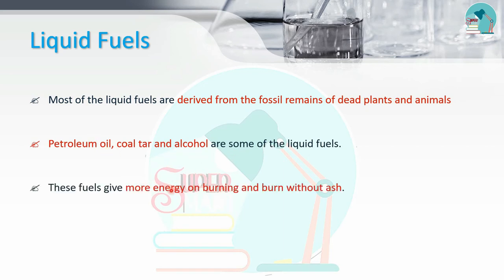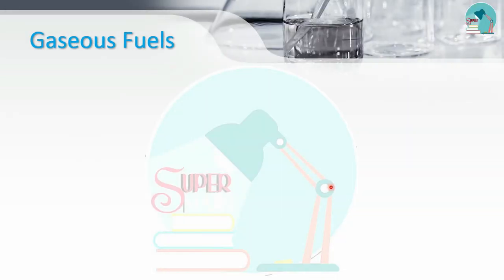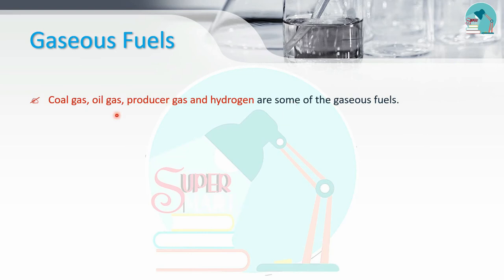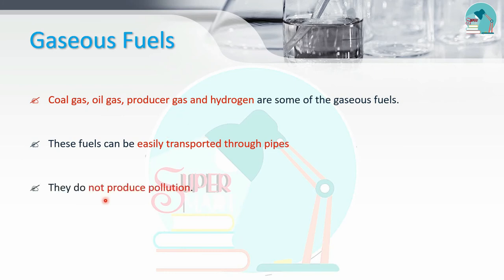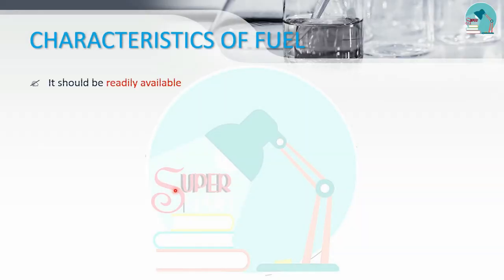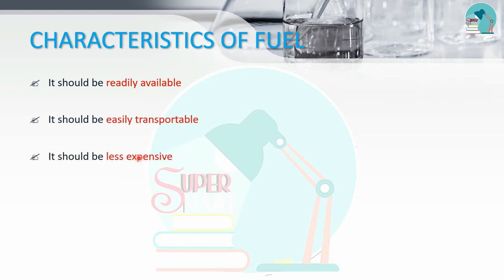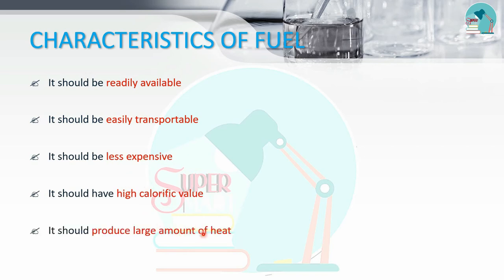Liquid fuels burn and produce more energy without ash. Gaseous fuels include coal gas, producer gas, and CNG. Gaseous fuels are easy to transport through pipes and produce less pollution. Good fuel characteristics include being readily available, easily transported, having a high calorific value, and producing a large amount of heat.